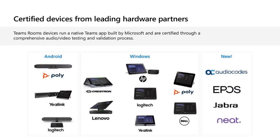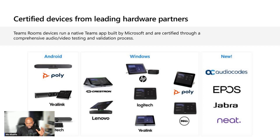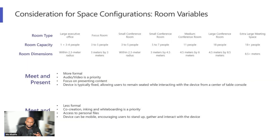When we're talking about Teams Rooms and thinking about what platform you want to deploy within the organisation, we want to start off by looking at what the meeting room personas look like. On screen you'll see a whole range of different OEMs that work with Microsoft — Poly, HP, Logitech, Yealink, Lenovo, Crestron, Neat, Jabra, AudioCodes, EPOS. Some OEMs create Windows devices, others are specific to the Android platform.